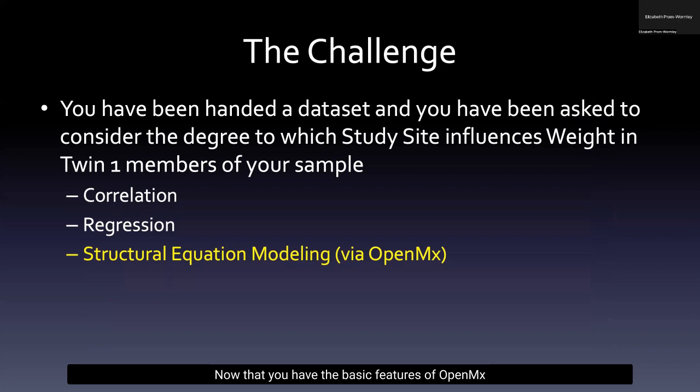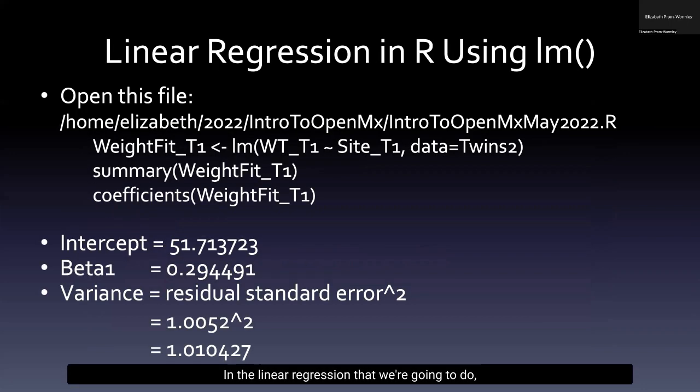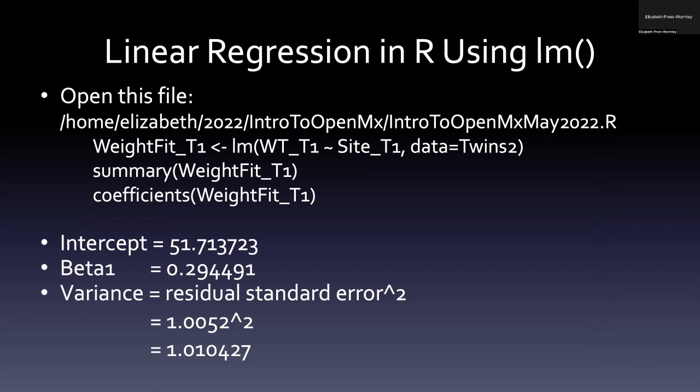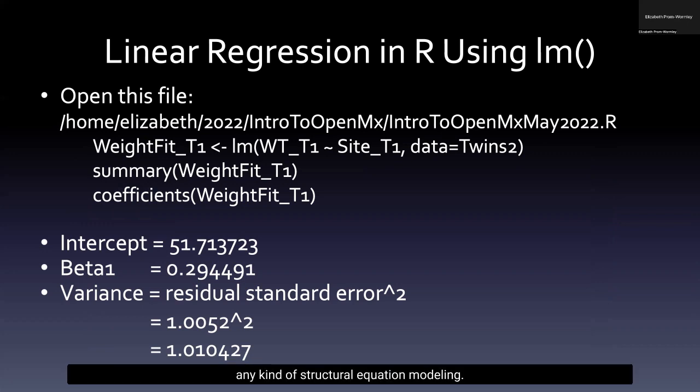Now that you have the basic features of OpenMX and the basic building blocks, we are now going to turn to trying our hand at using OpenMX to conduct a linear regression. In the linear regression that we're going to do, we're really just trying to see if there is a relationship between study site and weight for all twin one members of twin pairs. But before we get going with an OpenMX linear regression, we're actually going to conduct a linear regression using the LM function in R.